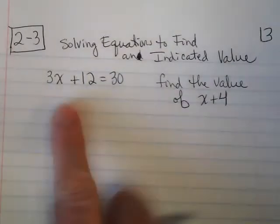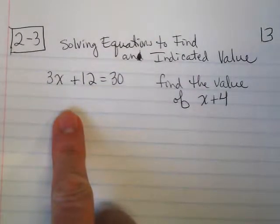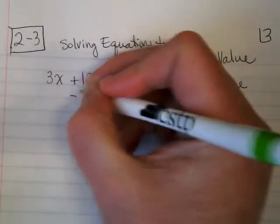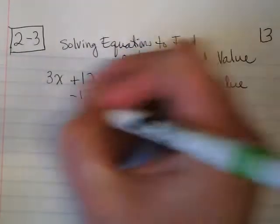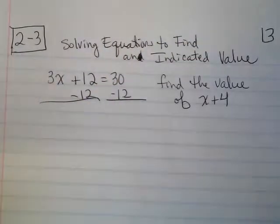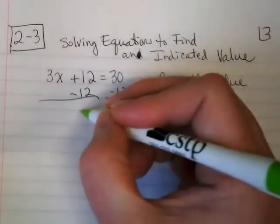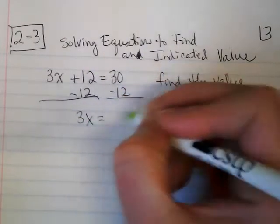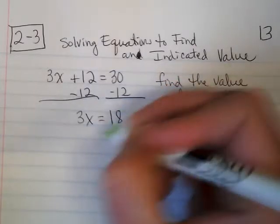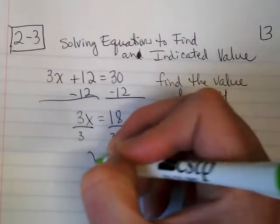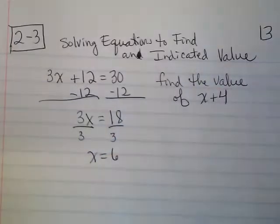So we know what to do with this. What's our first step? Subtract 12. On the left side of the equation, we end up with 3x, and on the right side we end up with 18. We're going to divide by 3, meaning that x is equal to 6.